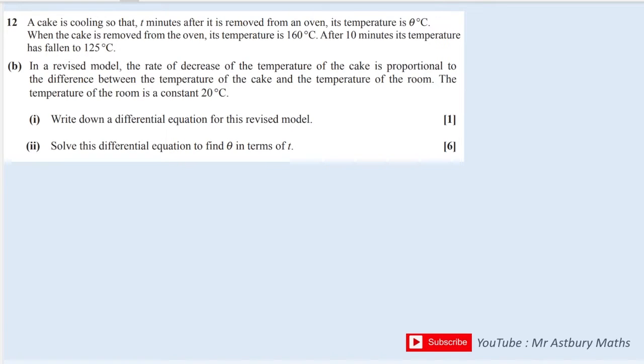In a model, the rate of decrease of the temperature of the cake is proportional to the difference between the temperature of the cake and the temperature of the room. The temperature of the room is a constant 20 degrees centigrade.